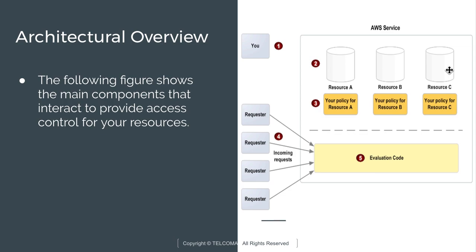Under AWS services we have defined our policy for resource A, policy for resource B, and policy for resource C. We have created resources one, two, and three and defined the policy for various resources. We are also having various incoming requests from the requester.